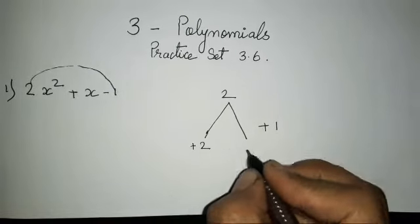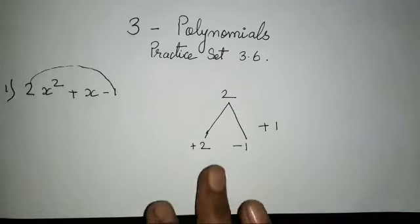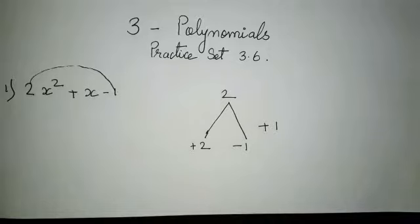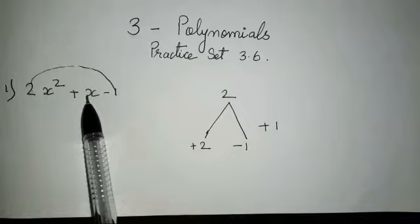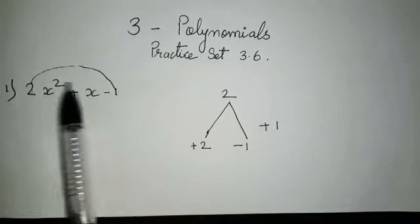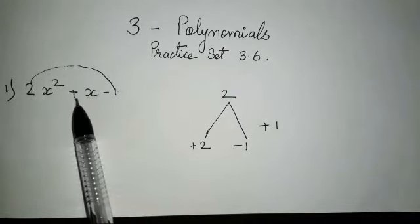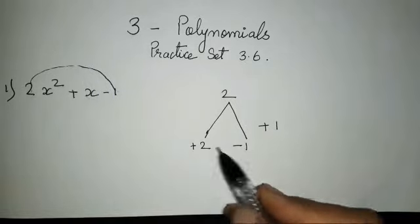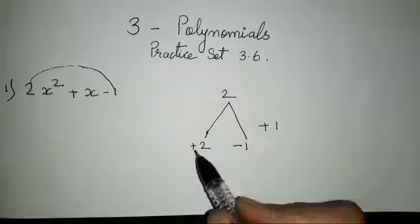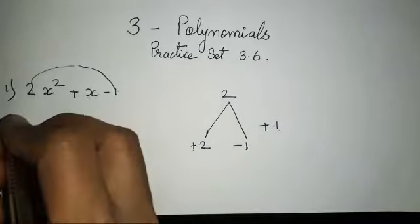In case you all are not able to understand, you all can watch my earlier video on factorization for 8th standard. It's basic but I think it is more than sufficient for you all to understand. So when we have to find the middle term - splitting the middle term - you all have to multiply the first and the last term. That is 2×1=2, and by addition and subtraction you should be able to get the middle term, which is 1. So plus 1 - obviously 2×1=2, plus and minus, minus, and the sign of the bigger number: 2 minus 1 is going to be 1. It's that simple.